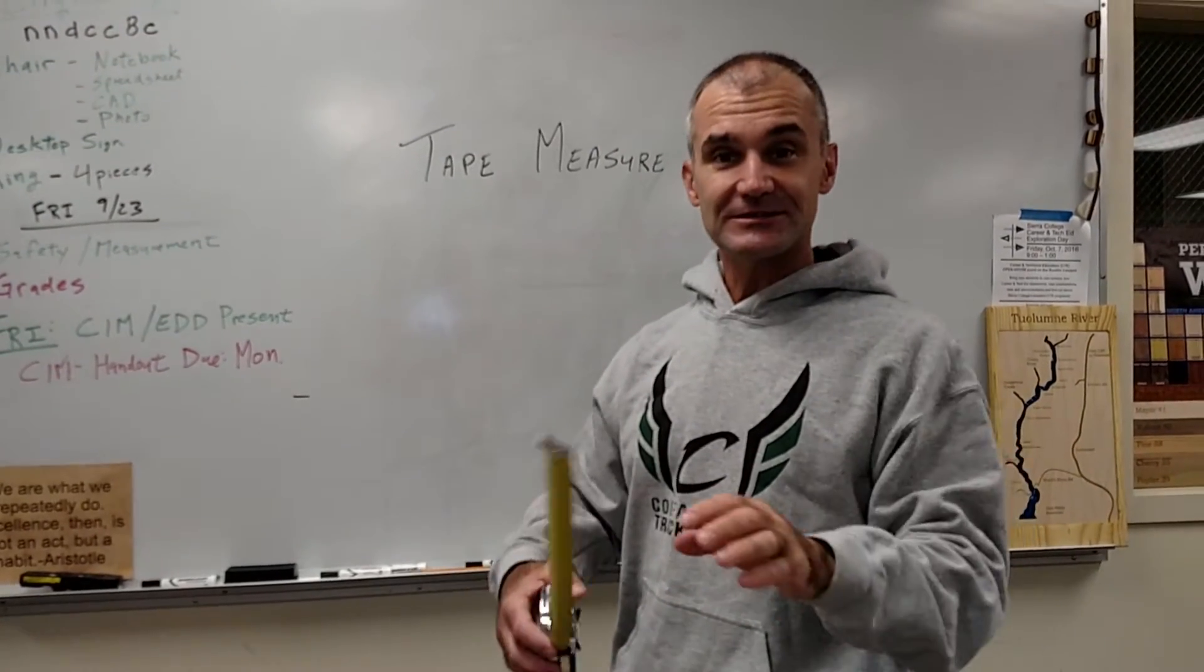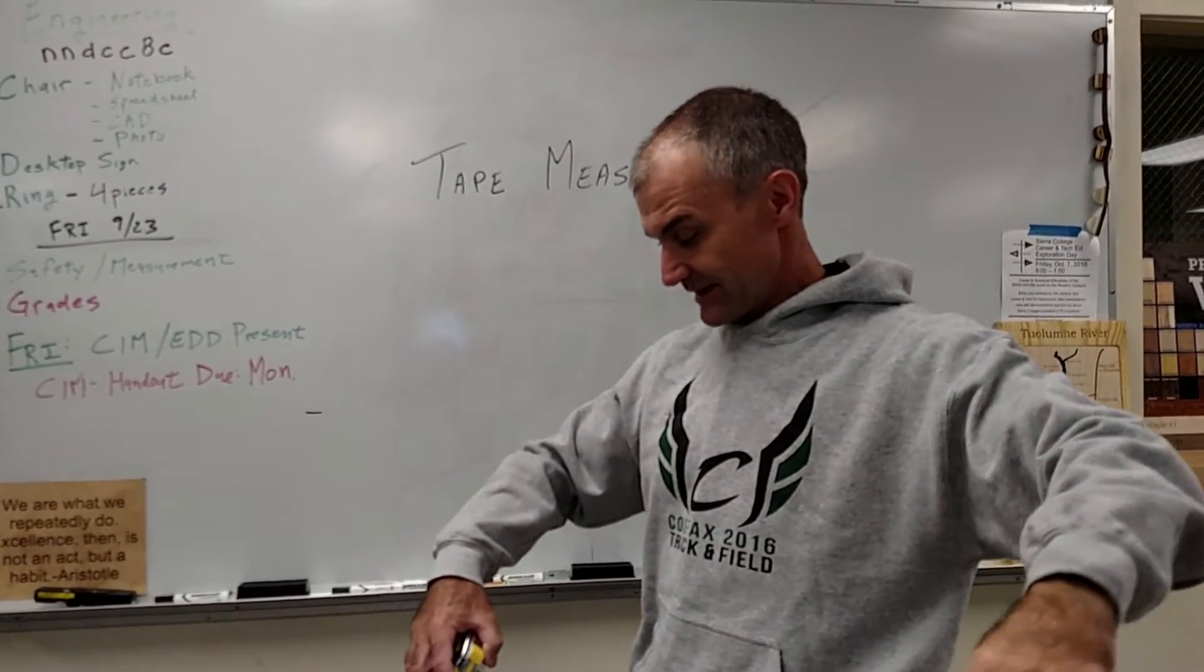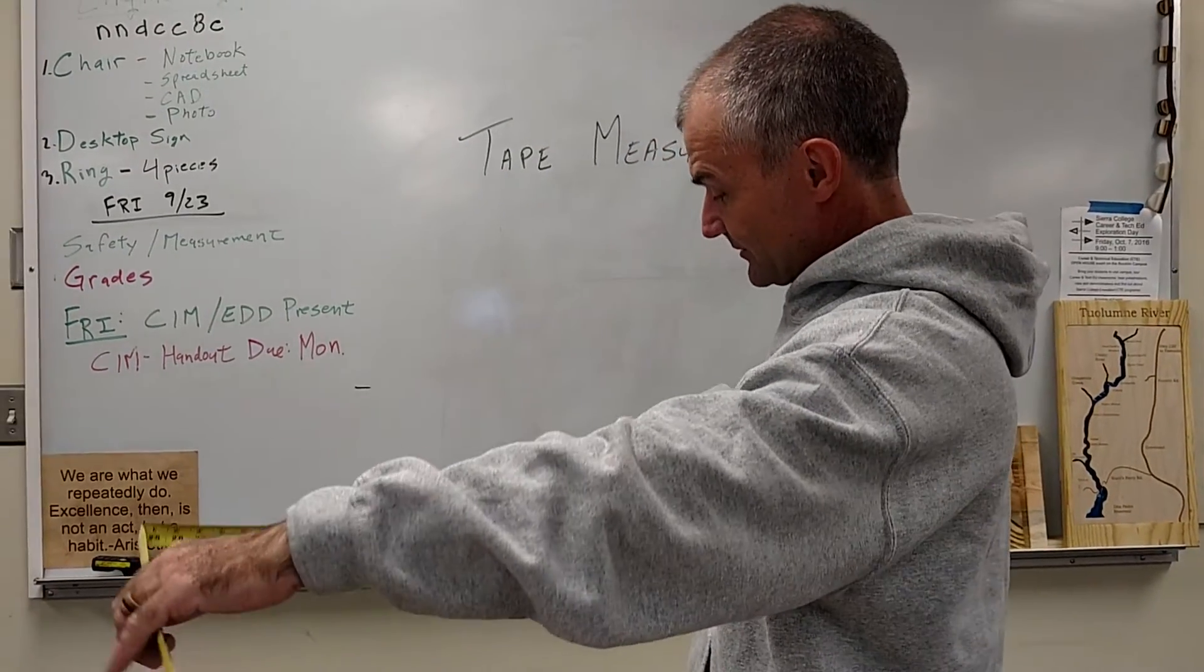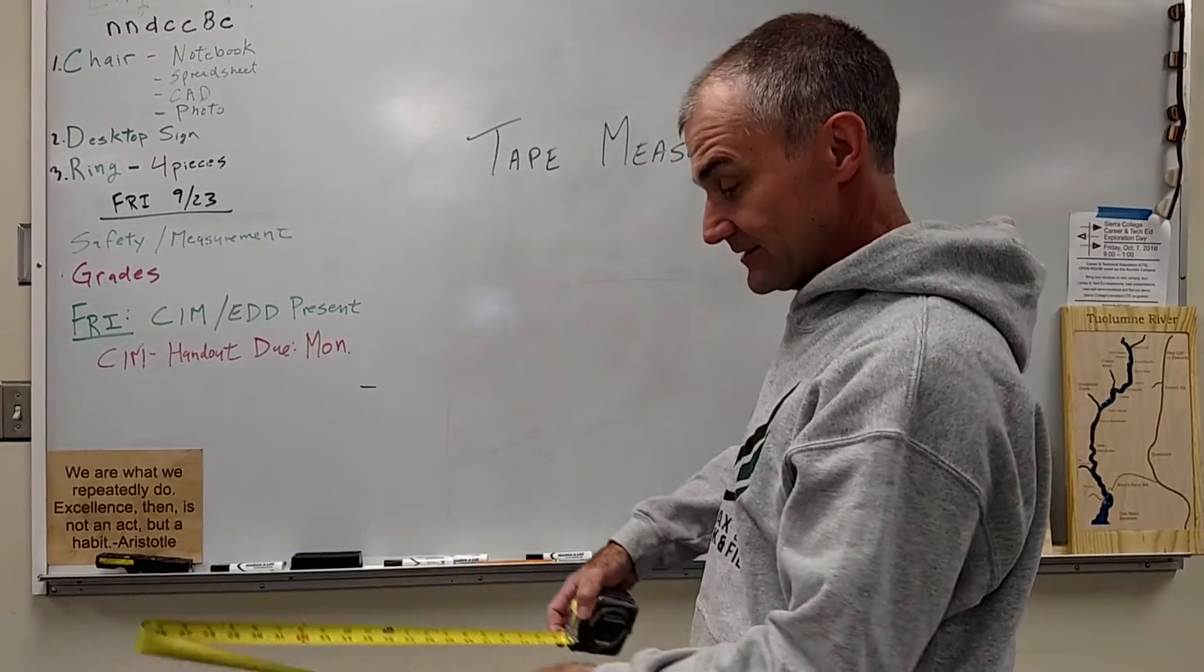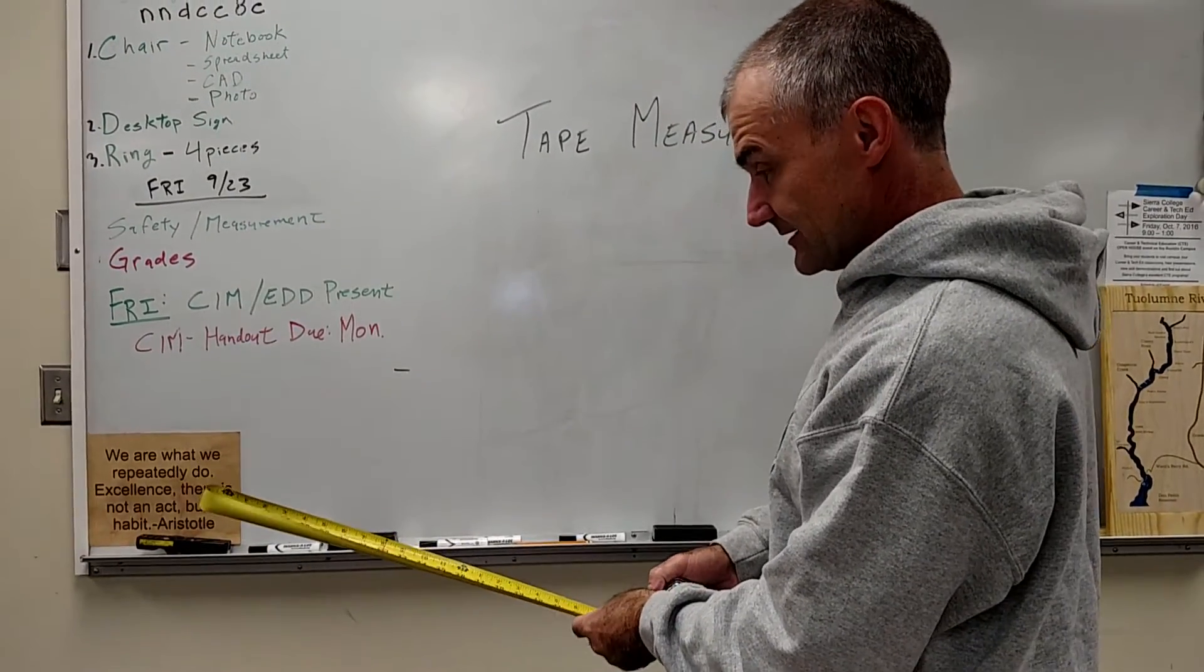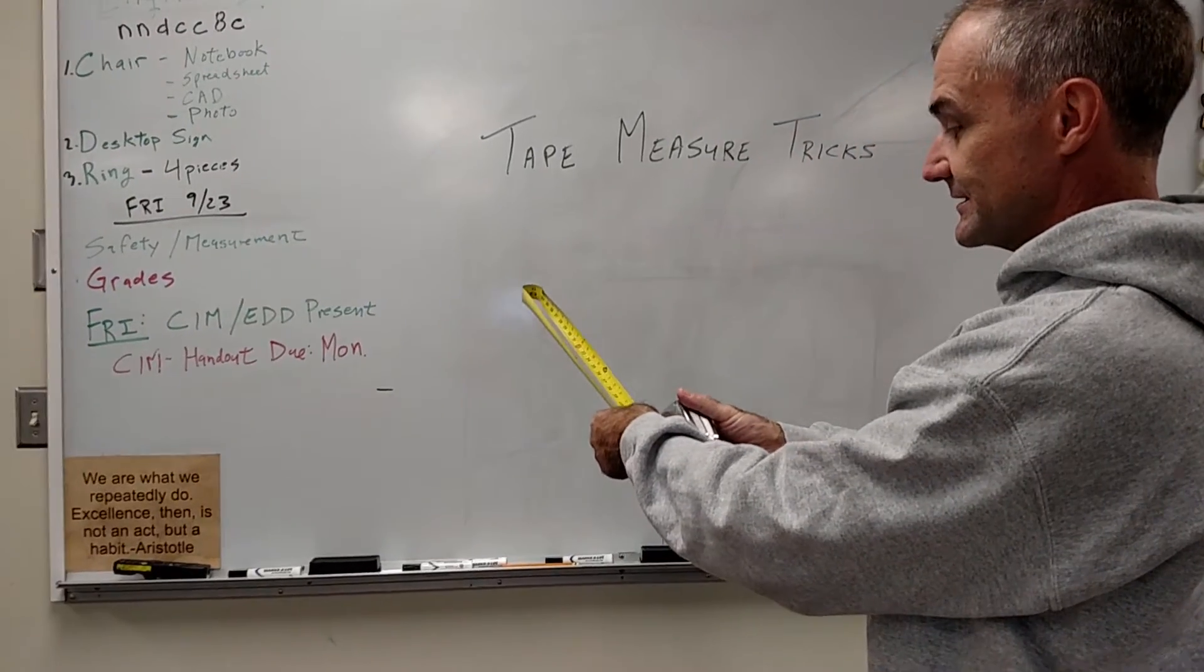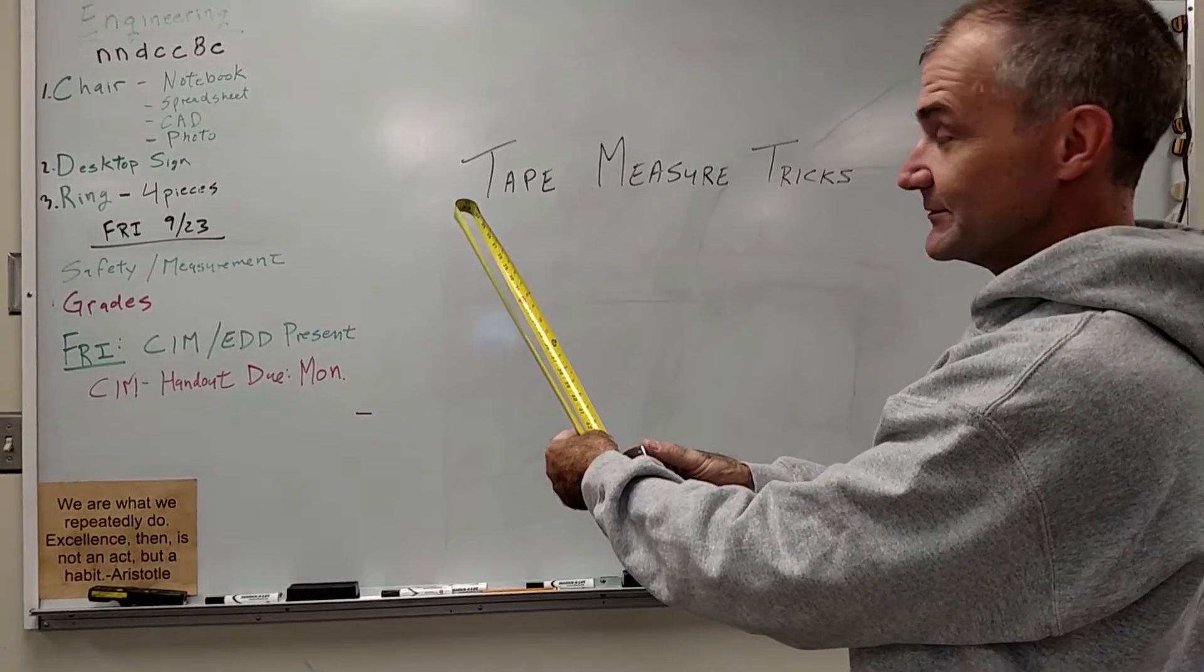The third trick is you could use it to divide numbers. So if I have a number like, I don't know, 45 and a half, I open it right up to 45 and a half. I double it over. And I look right down the center there, and I can see it's 22 and 3 quarters. So you could use it to divide numbers.